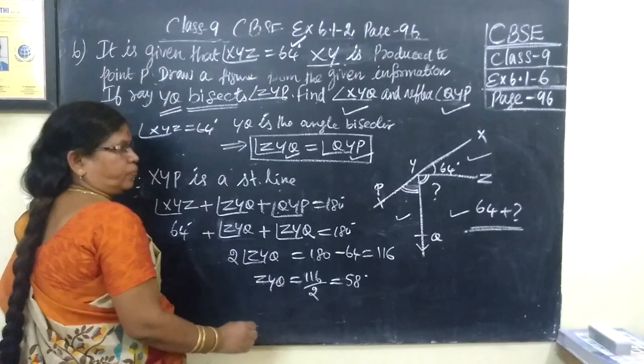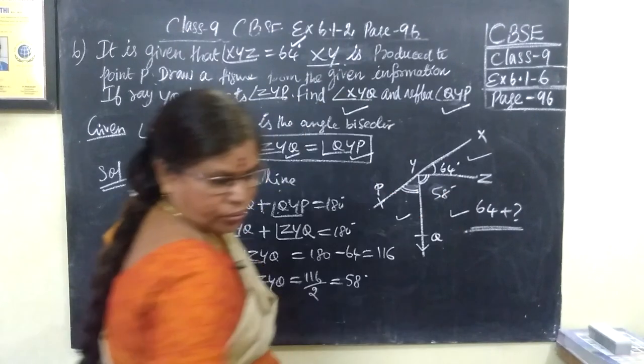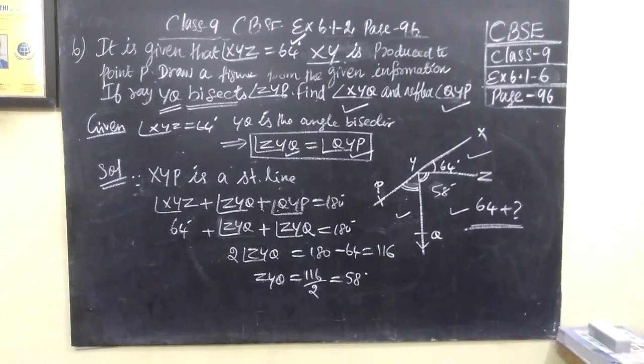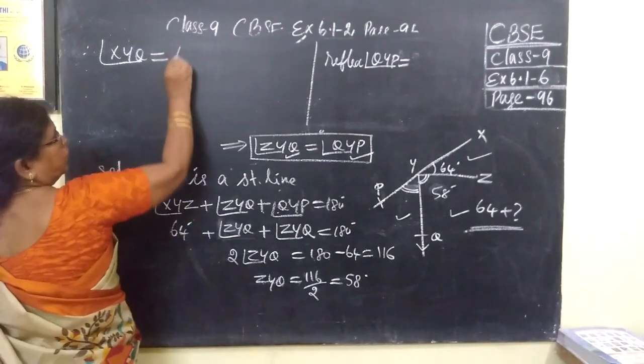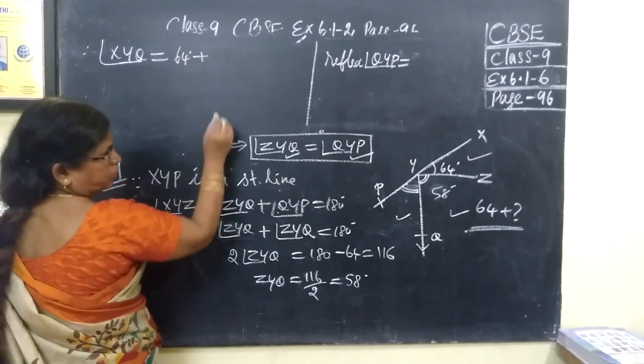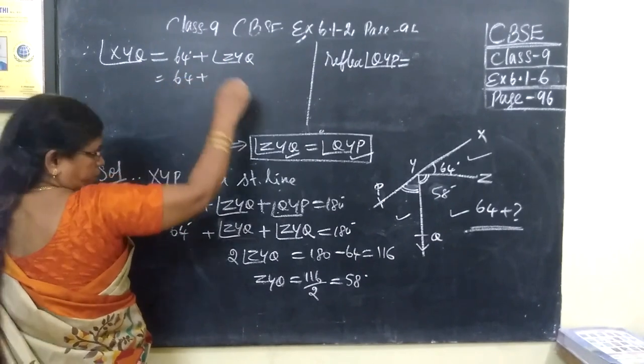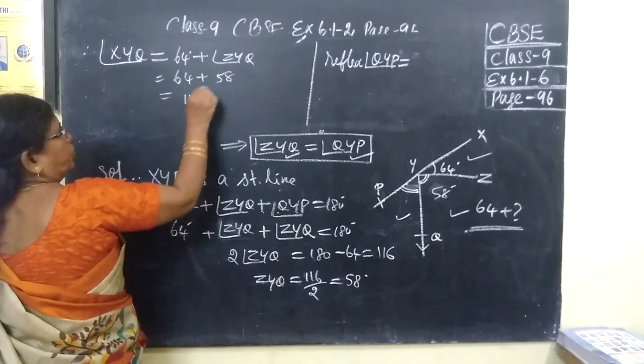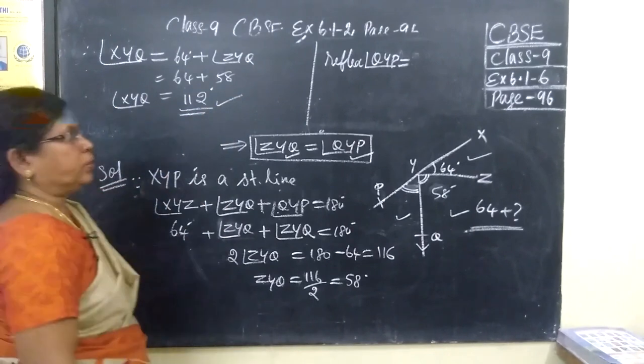And what else to find? Then you add 64. We have found this as 58. Now add these two. XYQ equal to 64 plus this ZYQ equal to 64 plus 58, equal to 122. This is the first answer. XYQ equal to 122. First answer over.